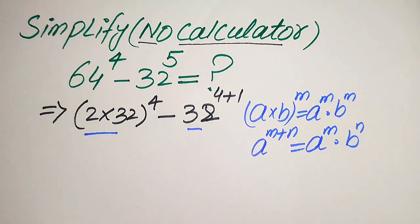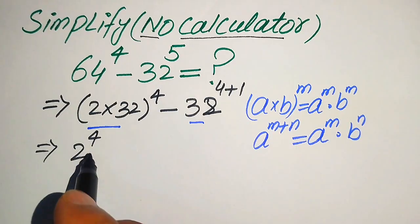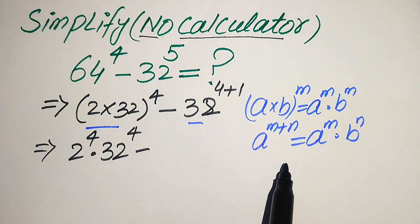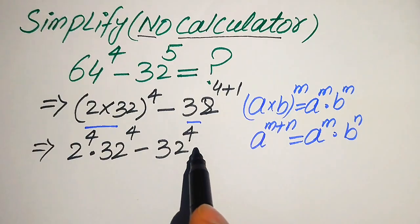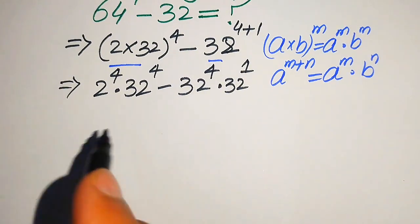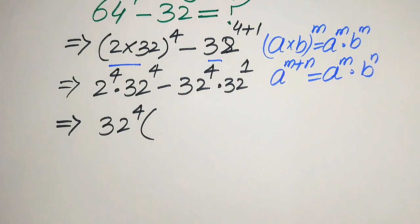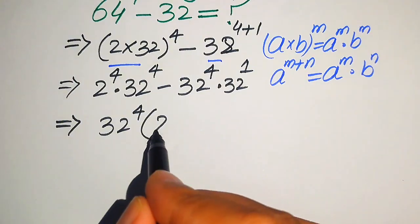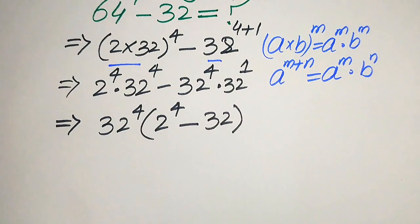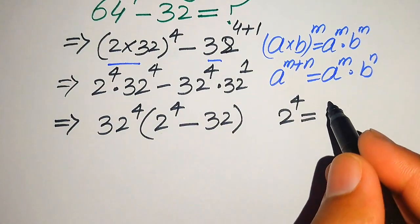According to these two exponent laws, we break the first term: we write it as 2 to the power of 4 multiplied by 32 to the power of 4. In the second term we apply the second exponent law, and it will be written as 32 to the power of 4 multiplied by 32 to the power of 1. Now you see that both terms involve 32 to the power of 4, so we take 32 to the power of 4 as common, and we get the remaining values: 2 to the power of 4 minus 32.